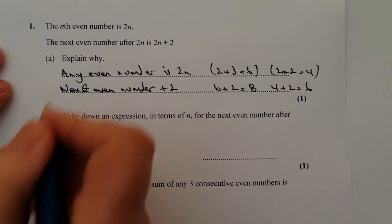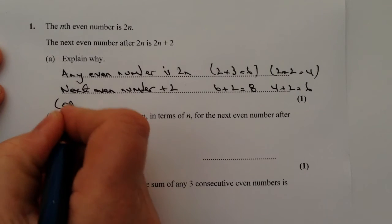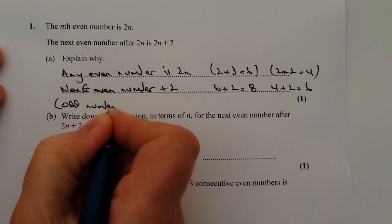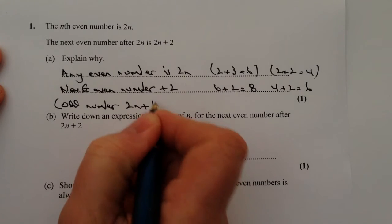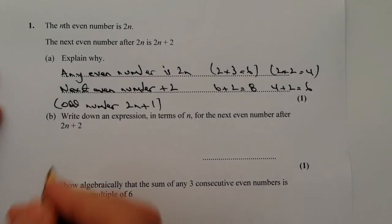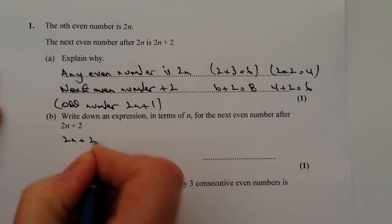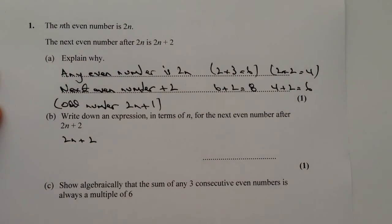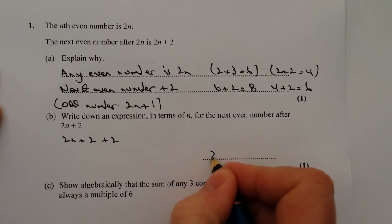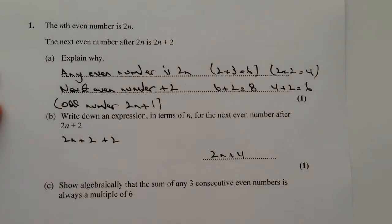You could also make the comment that the odd number must be 2n plus 1. On to question B: write down an expression in terms of n for the next even number after 2n plus 2. So we've got 2n plus 2 as the first even number, and the next even number is going to be 2 more than that, so it's going to be 2n plus 4.